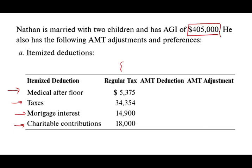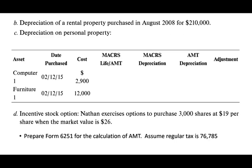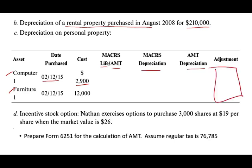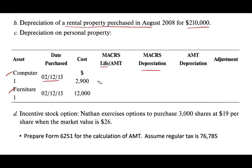Let's go over the problem, then do it step by step. They're giving you itemized deductions, depreciation of a rental property purchased in August 2018 for $210,000, depreciation on real property and personal property — a computer and a piece of furniture. They want you to find the MACRS life, MACRS depreciation, AMT depreciation, and any adjustments. Also, there is an incentive stock option: Nathan exercised options to purchase 3,000 shares at $19 when the market value is $26. Prepare a Form 6251 for the AMT calculation, assuming regular tax of $76,785. If you understand AMT, this should be straightforward.